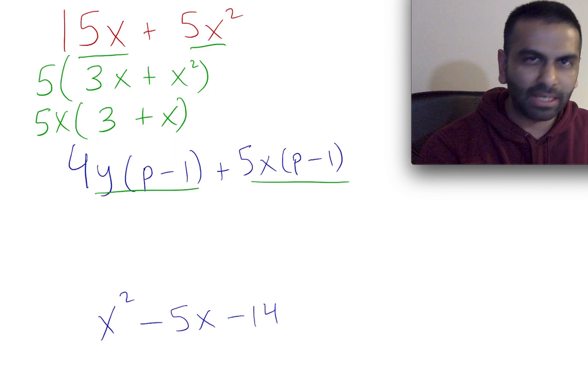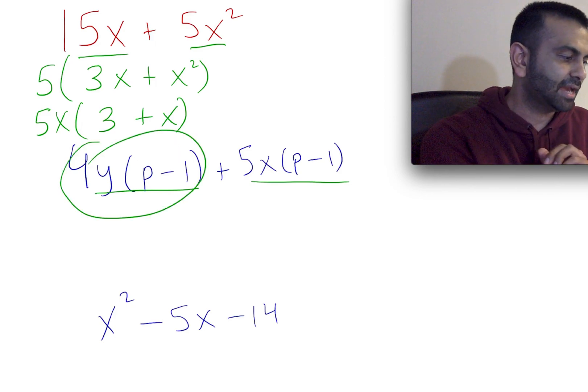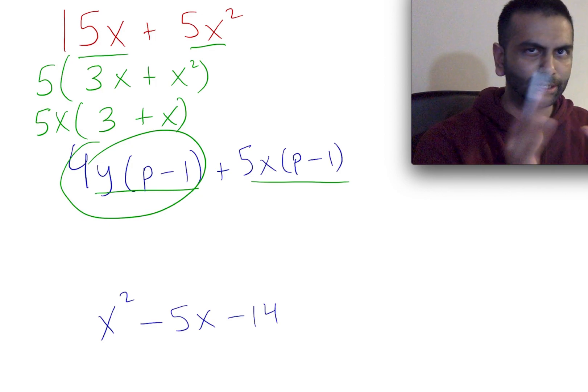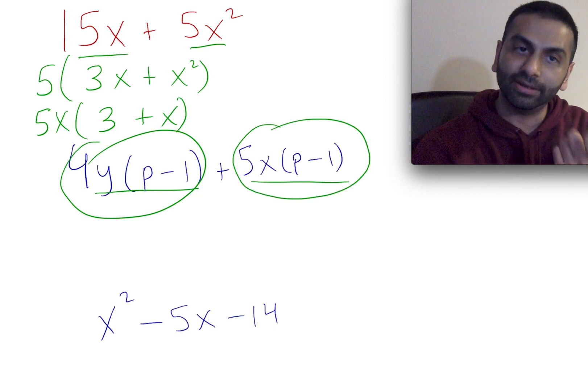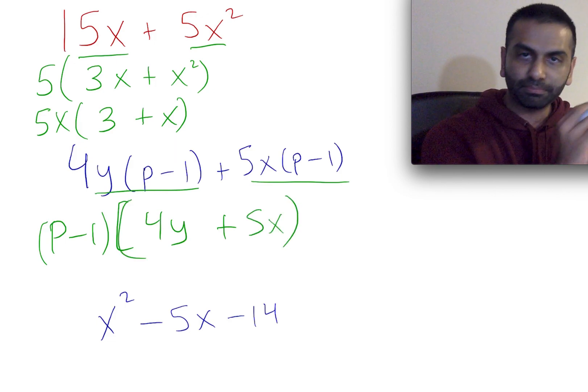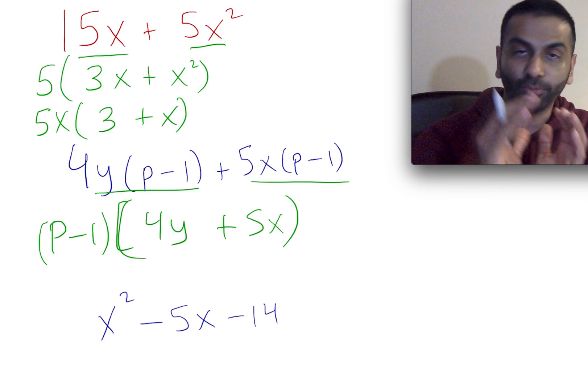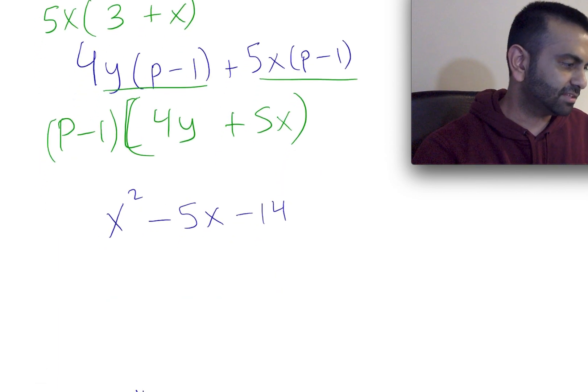But this weird quantity, p minus 1, technically as a quantity, both of these things have it. If I take that first term and divide it by p minus 1, it would cancel out. Similarly, if I divided this guy by p minus 1, you'd just be left with the 5x. So when I factor out p minus 1, in this first term I'm left with just 4y, and in the second term I'm left with just 5x. So p minus 1 times 4y plus 5x would be your final answer here. So that's factoring.